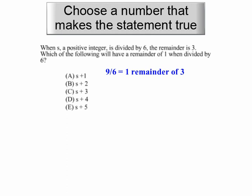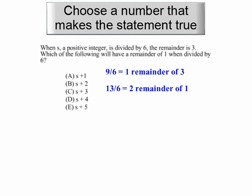Now we want a number that leaves a remainder of 1 when we divide it by 6. Notice we're adding numbers in all our answer choices to s, so we need a number bigger than 9 that 6 goes into and leaves a remainder of 1. That would be 13 — 6 goes 2 times and leaves a remainder of 1. The difference between 13 and 9 is 4. You add 4 to 9 to get to 13, so s plus 4 is our answer.